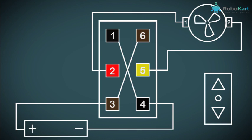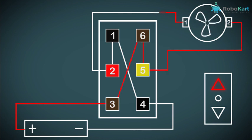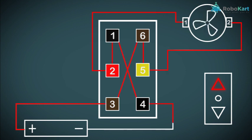When we press the switch in the upward direction, Terminal 1 and Terminal 2 of the DPDT switch will be connected, and Terminal 6 and Terminal 5 will be connected. At that time, the positive supply will be flowing from Terminal 2 of the motor and the motor will start moving in the anticlockwise direction. So this was all about the internal connection of the DPDT switch. The main application of the DPDT switch is to control the motor in both directions — forward as well as in reverse direction.